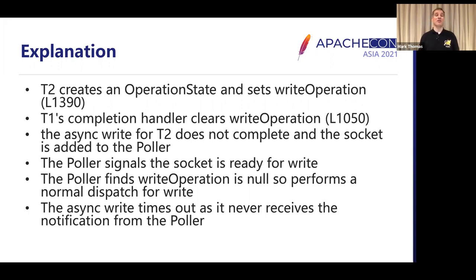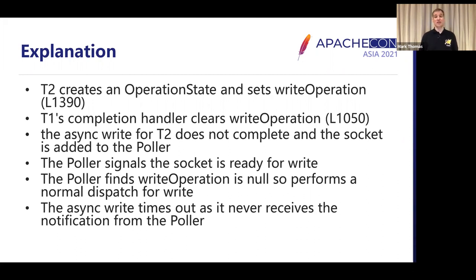Thread two doesn't see the problem immediately. The asynchronous write continues, but for whatever reason it doesn't complete, so the socket's added to the poller. A little bit later, when the socket is available for write again, the poller signals that, goes to look for the operation state in the write operation field, finds it's null, and that's where things go wrong. The async write eventually times out because it never receives the notification.